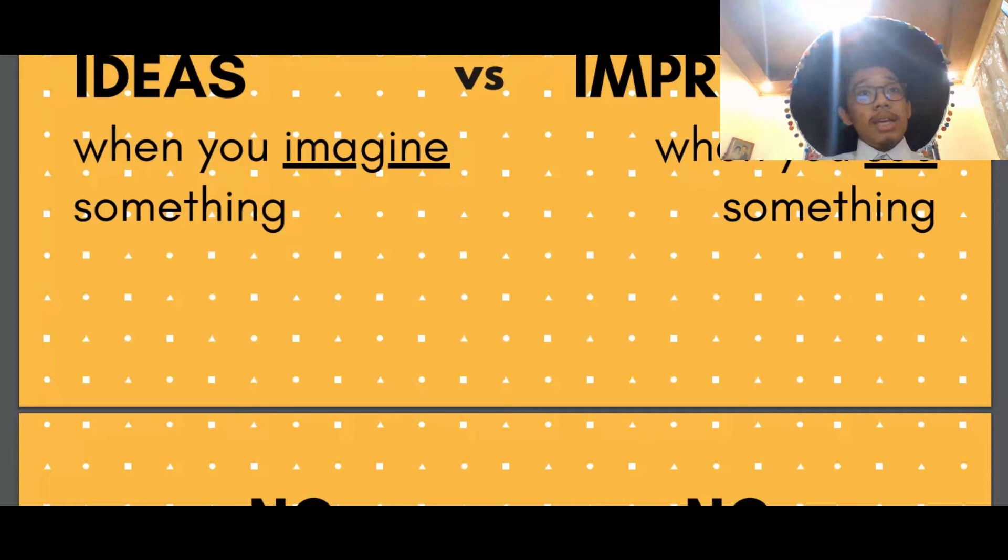Whereas an idea is when you imagine the red book. For example, you are already at your house, resting or sitting down on a couch or lying down on your bed and you remember the red book that you saw in the library. That is ideas, or the concept of ideas.